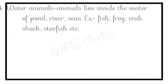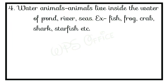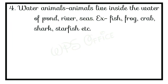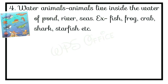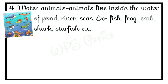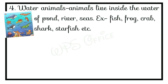The fourth type is water animals. Water animals are animals that live inside the water of ponds, rivers, seas, and other water bodies. For example, many types of fishes, frog, dolphins, whale, crab, shark, starfish.